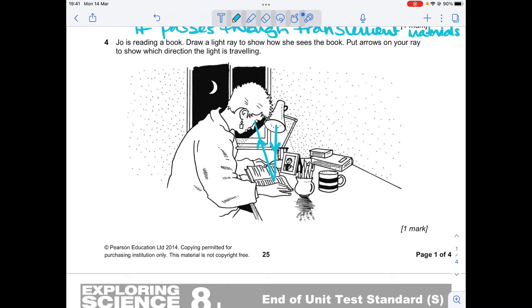The mark scheme says both arrows must be present and pointing in the correct direction for you to have a mark. So you need an arrow that goes from the light to the book to Jo's eyeball. One continuous line, arrows pointing in the right direction.